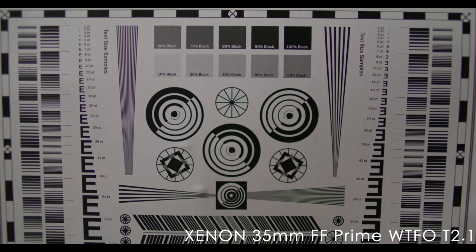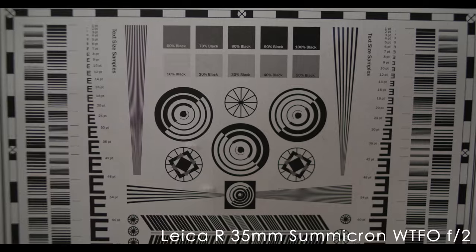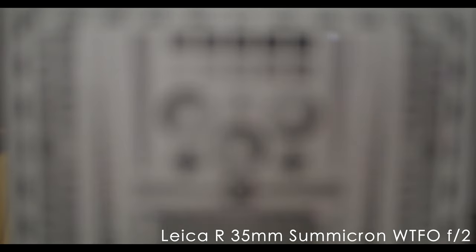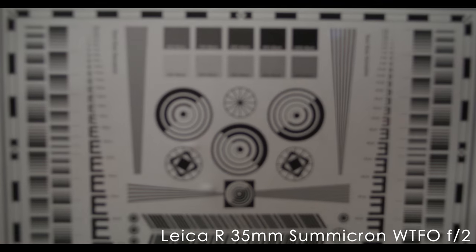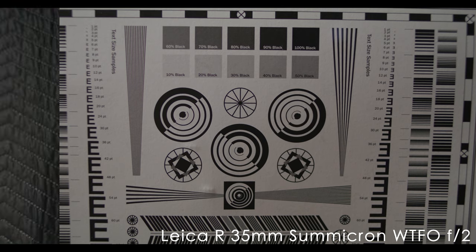Now here we're just going for an overall sharpness test. This is the xenon and ripped wide open at T2.1. Still pretty soft around those corners. Now the Leica R. Notice that little jump in contrast. The Leica R almost has a little kind of veil over it. Very kind of desaturated look. And this was after it was CLA'd.